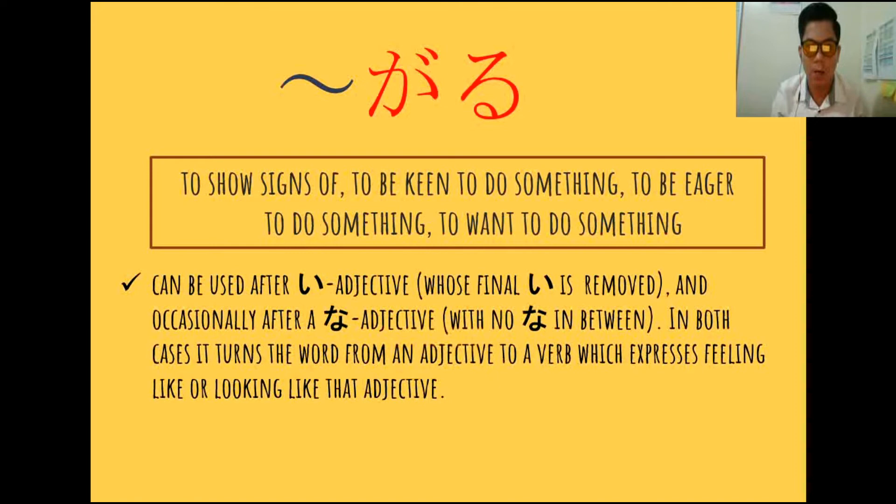Garimasu can be used after i-adjective, where the final i is removed. And occasionally, after na-adjective, with no na in between. So for i-adjective, we have to omit i, then add garu or garimasu. Then for na-adjective, we have to omit na, then add garimasu.